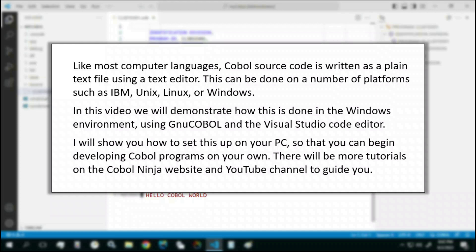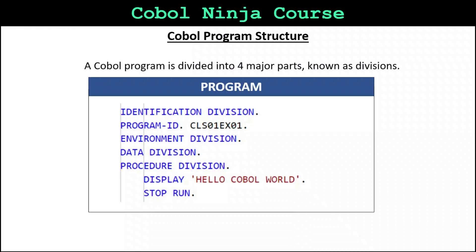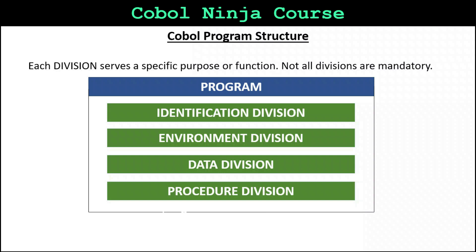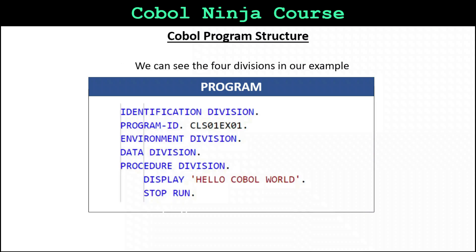There will be more tutorials on the COBOL Ninja website and YouTube channel to guide you. Before we start editing, let's talk about COBOL program structure. A COBOL program is divided into four major parts known as divisions. Each division serves a specific purpose or function. Not all divisions are mandatory. We can see the four divisions in our example.